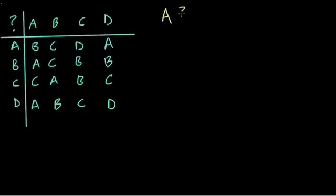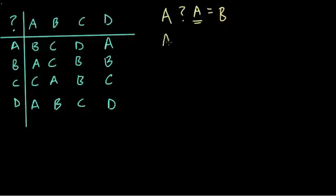So if I take A question mark A, what do I get? Well, A question mark A gives me B. So A is not the identity element because it doesn't bring me back to A. If I keep testing — A question mark B brings me to C. B is not the identity element because it brings me to C, not back to A.